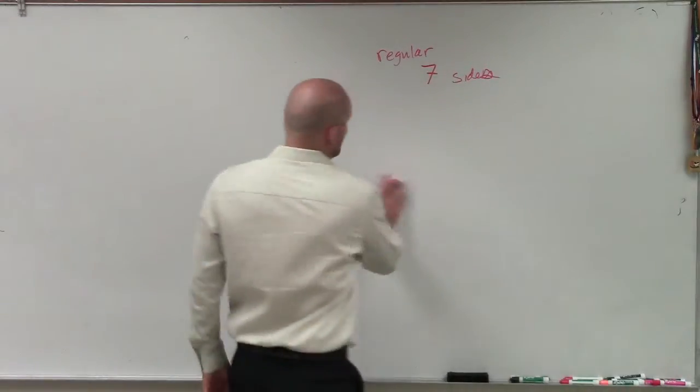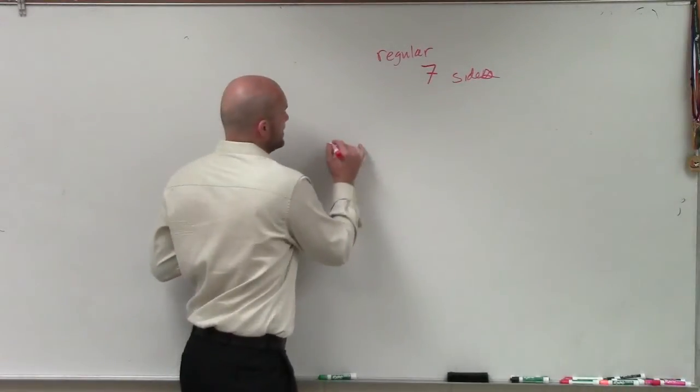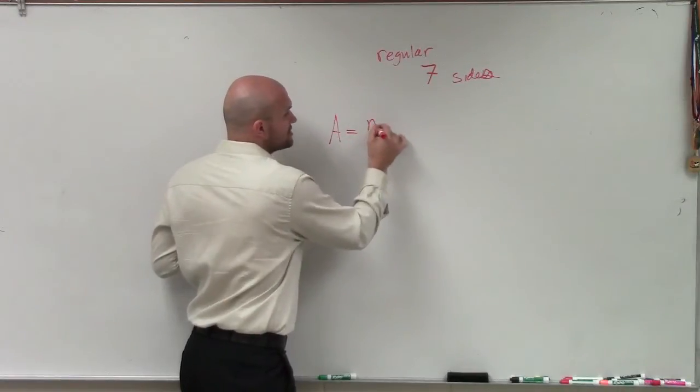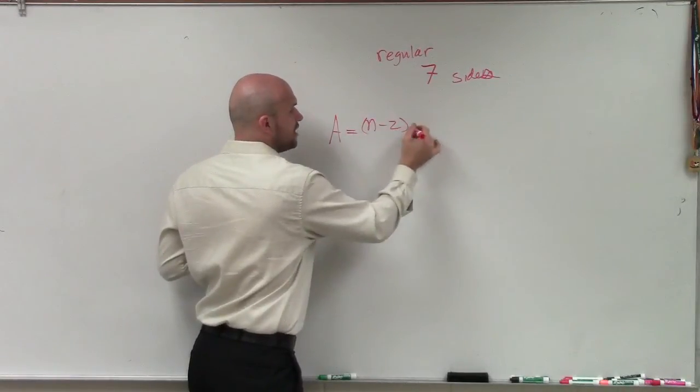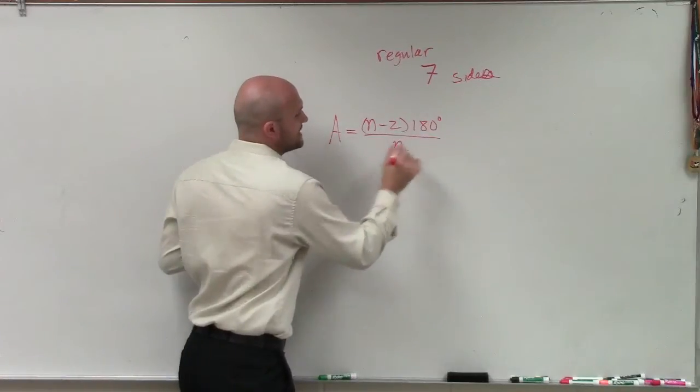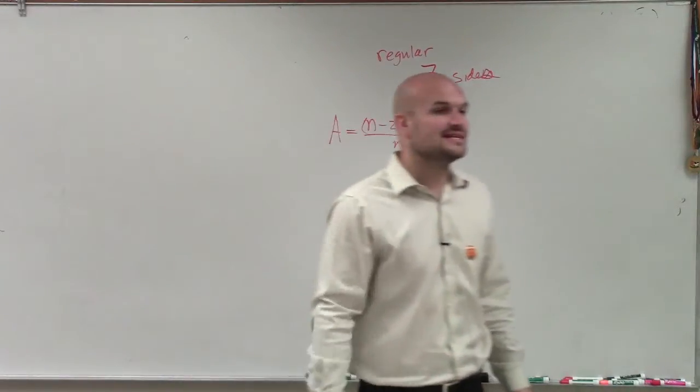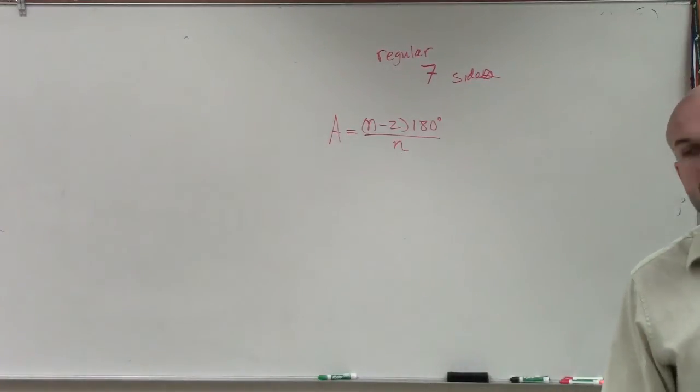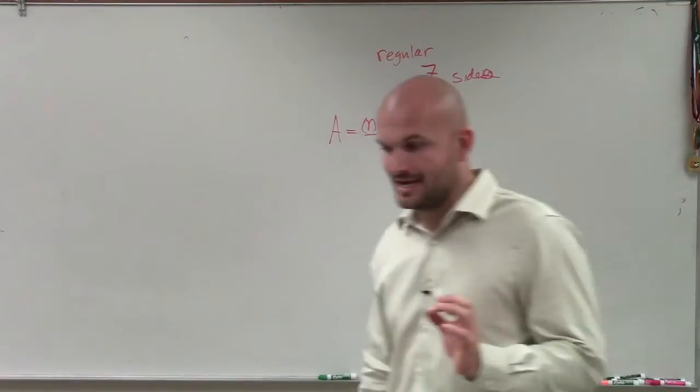When we have a regular polygon, to find the measure of one angle, we say angle equals the sum of all the interior angles divided by how many sides we have. That's going to tell us the exact measurement of every single angle of the regular polygon.